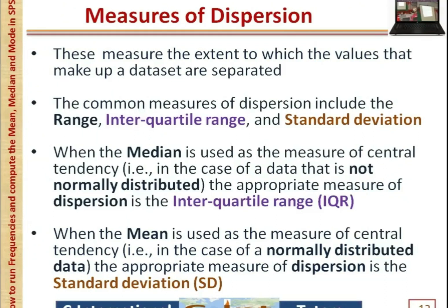Although this video is focused on the measures of central tendency, it is important to note that the respective measures of central tendency have their corresponding measures of dispersion. The common measures of dispersion include the range, interquartile range, and standard deviation. When the median is used as the measure of central tendency, the appropriate measure of dispersion is the interquartile range. When the mean is used, the appropriate measure of dispersion is the standard deviation. Both measures are usually computed together.